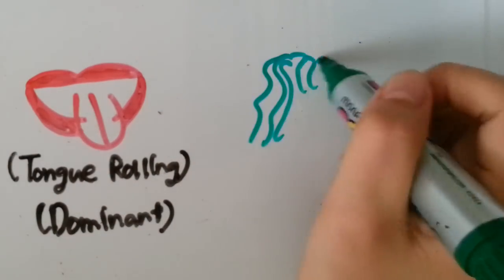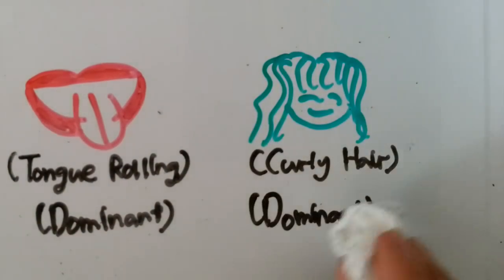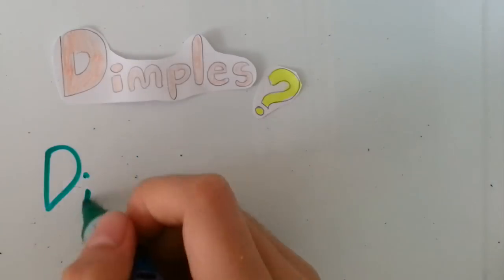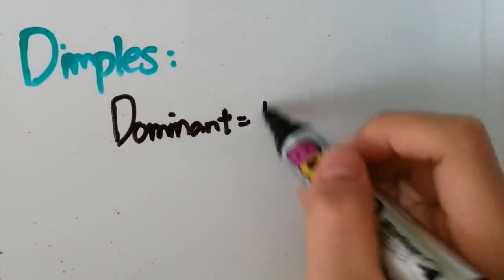Some of the most common dominant and recessive traits are being able to roll your tongue, curl your hair, and so on. Then what about dimples? Having dimples is dominant over not having them.